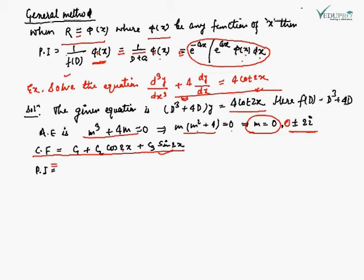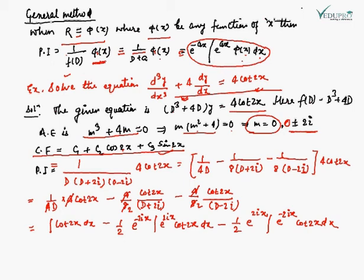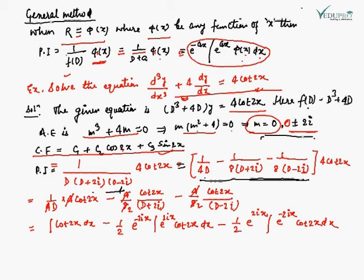Now we calculate the particular integral to find the complete solution. The f(d) has three roots: 0, +2i, and −2i, so we write PI = 1 upon [d(d + 2i)(d − 2i)] times 4 cot 2x. Applying partial fractions, this becomes [1/(4d) − 1/(8(d + 2i)) − 1/(8(d − 2i))] multiplied by 4 cot 2x.